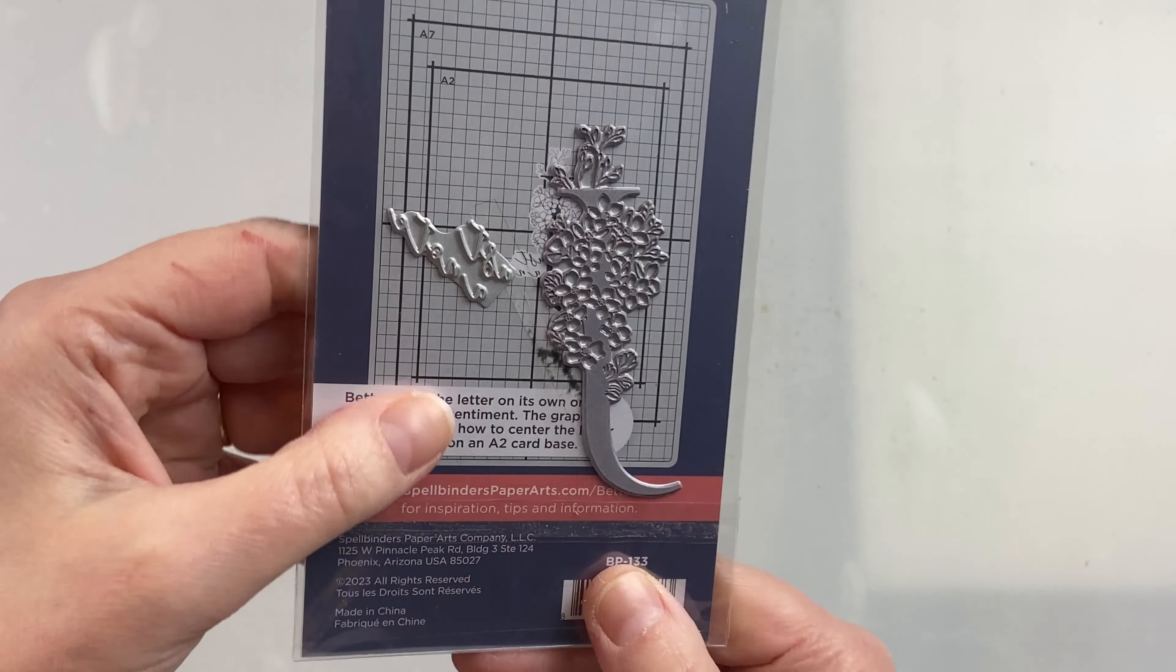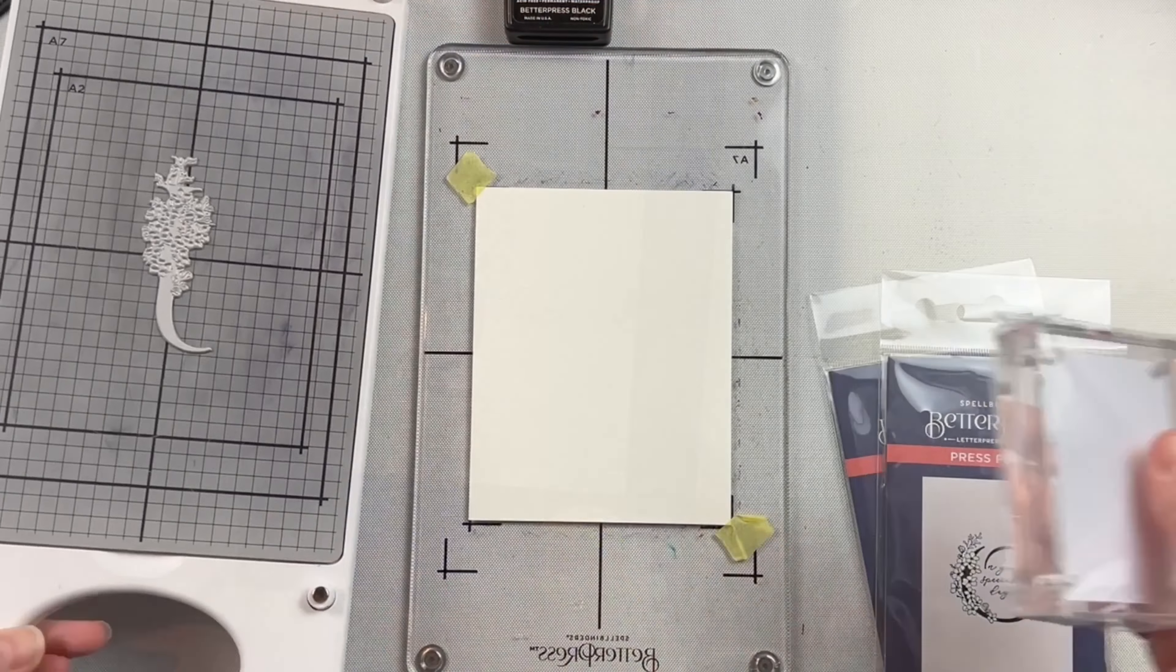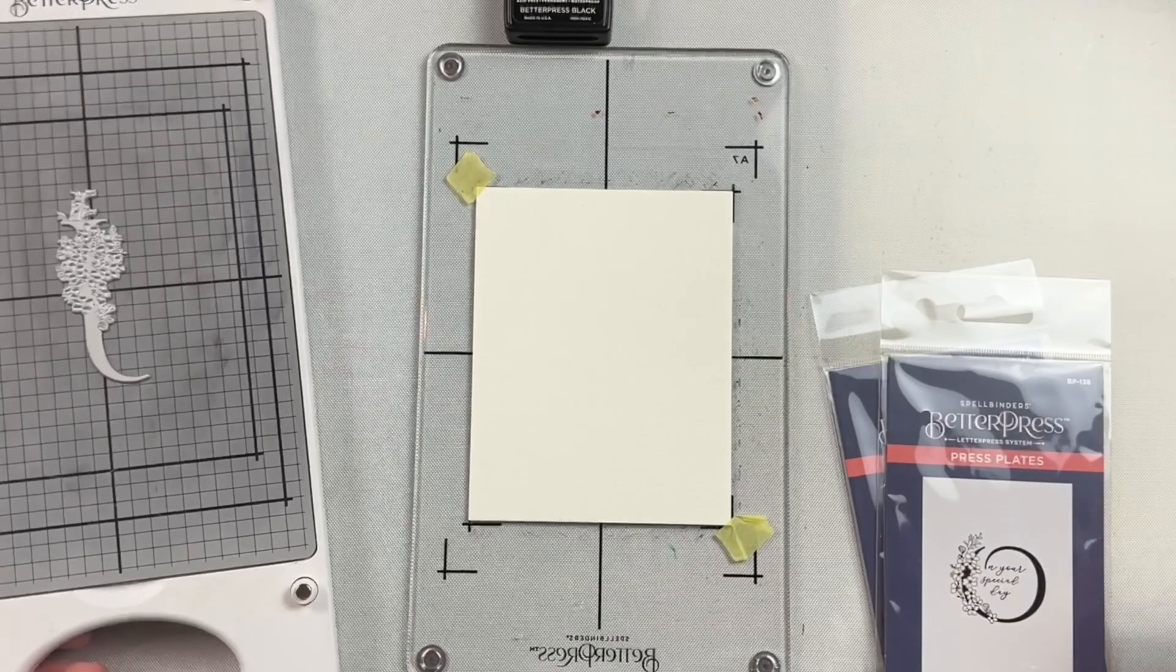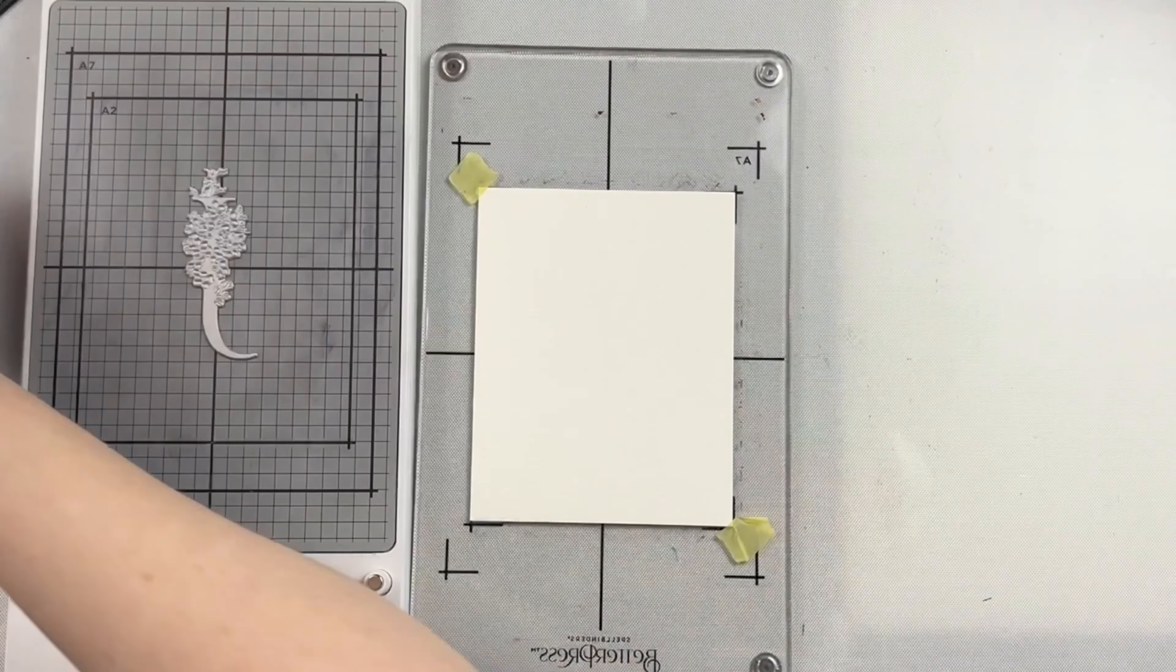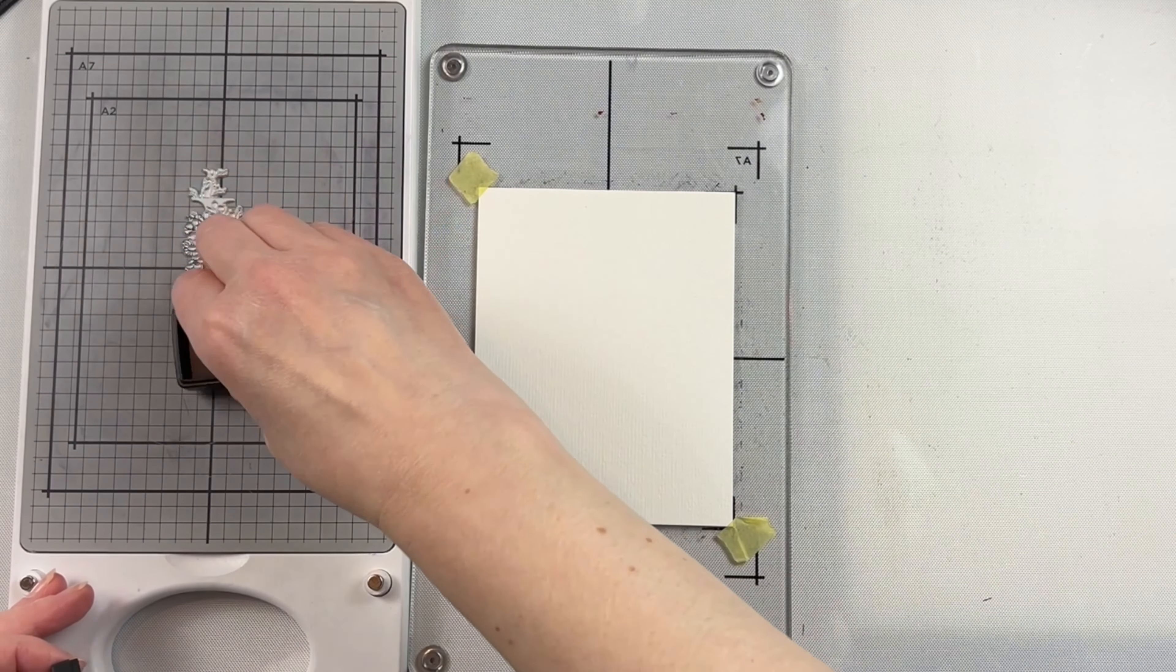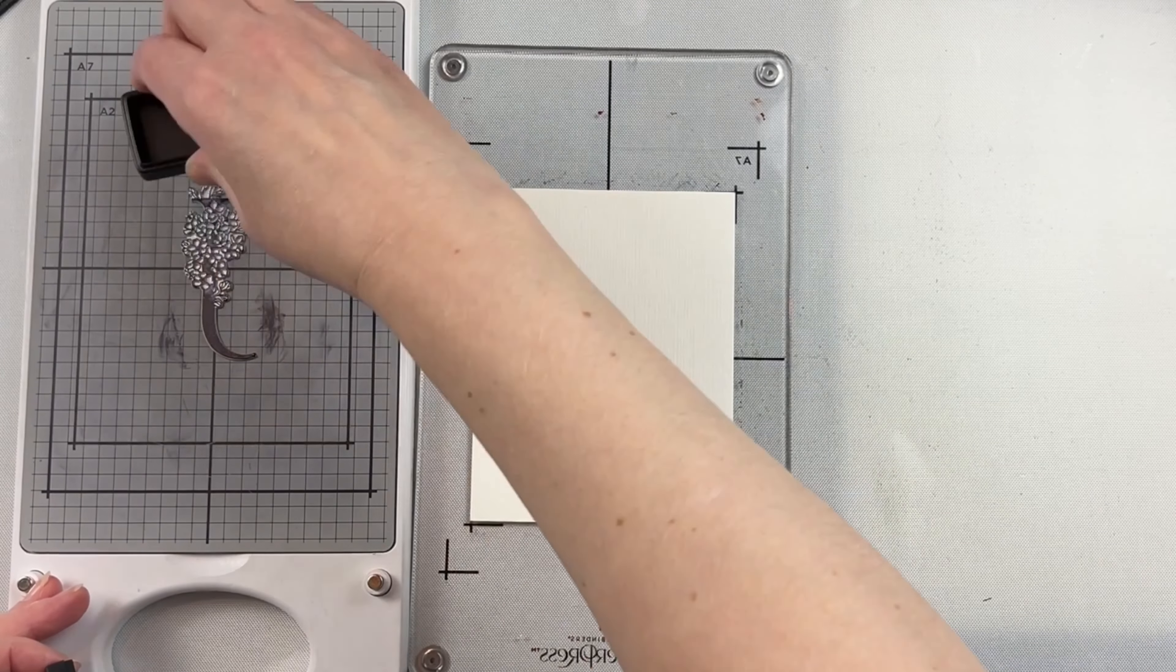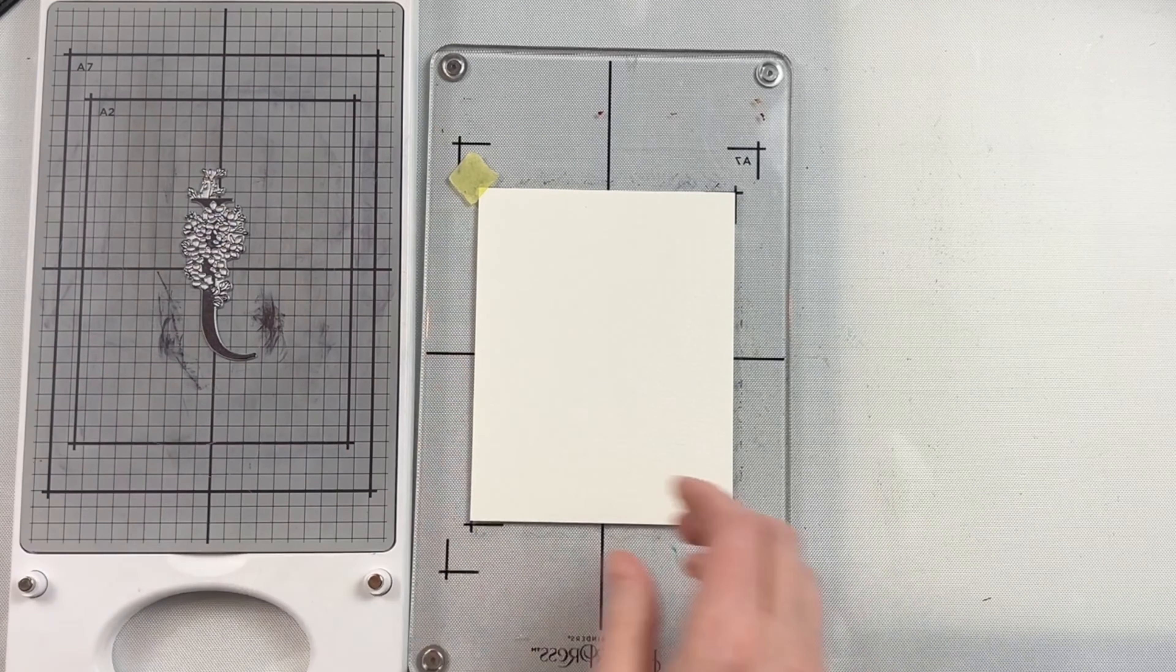This is the Every Occasion Floral J and Sentiment Better Press Plate from Spellbinders. I love that it has both the letter and a sentiment that suits the letter, and they're separate. So you can use just the letter alone or with the sentiment.